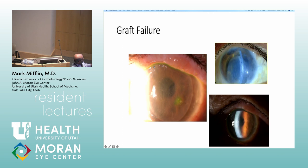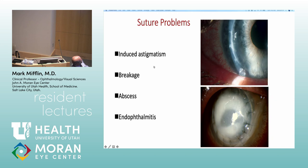Some reasons that grafts fail: dislocated DSAEK, a swollen button, a DSAEK with a fluid cleft — it's not attached. Also showing microcystic and stromal edema, failed PK, and suture problems including suture abscess leading in one case to a pseudomonas ulcer and loss of the graft. I've had a patient lose her eye due to a suture abscess — chronic, unrecognized fungal infection treated by local doctors. So you've got to manage degrading sutures.